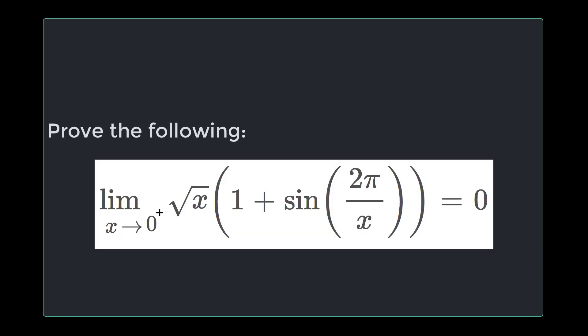The question we're working on today is prove the following: The limit as x goes to zero from the right of the square root of x times the quantity 1 plus sine of 2π over x equals zero.